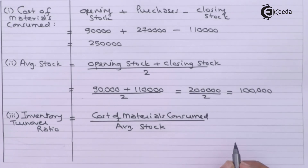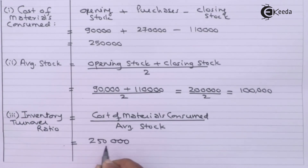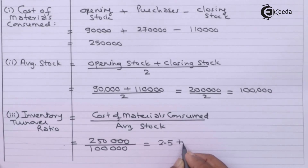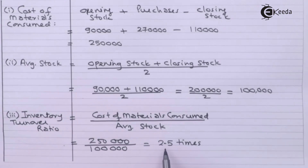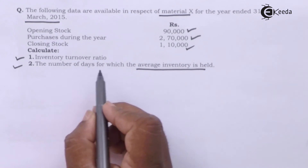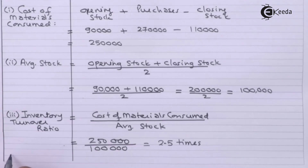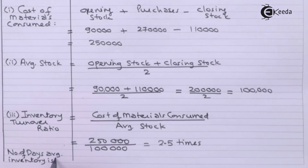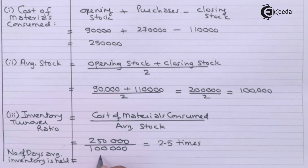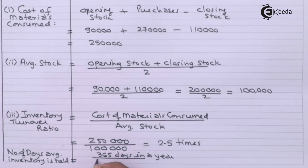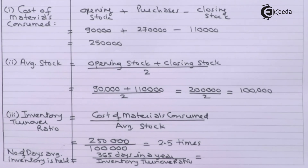Inventory Turnover Ratio equals cost of material consumed divided by average stock — that is 2,50,000 divided by 1,00,000. For number of days average inventory is held, we take 365 days divided by inventory turnover ratio.